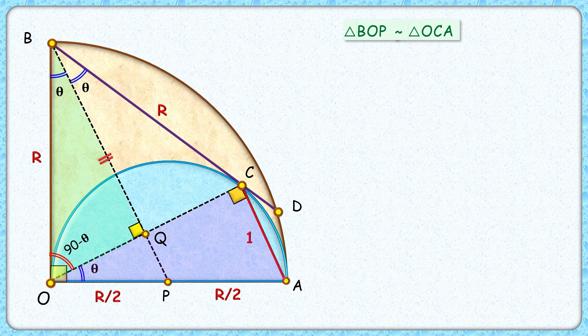As the triangles are similar, the ratio of corresponding sides will be equal. BO upon OP length will be the same as OC upon CA length. Putting the values here: BO is R, OP is R by 2, OC is what we have to find, and CA is 1 centimeter. Solving it, R will cancel and we'll get OC length as 2 centimeters.